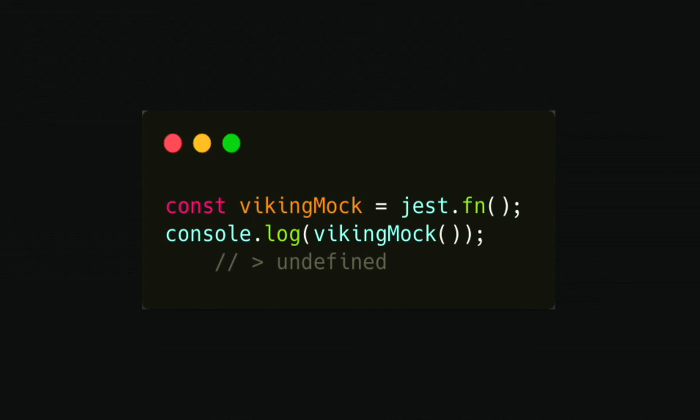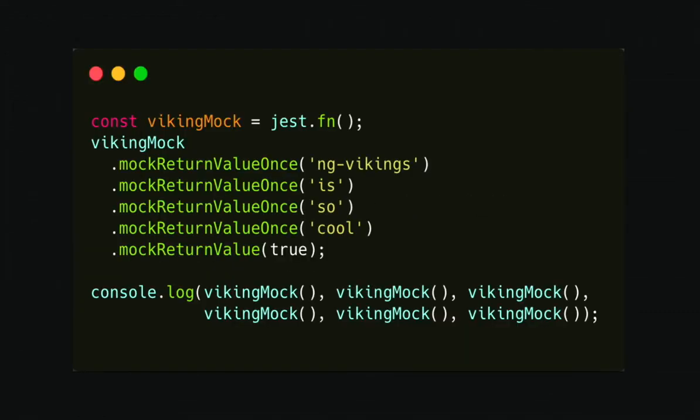And we have something else that we can perform with our mock. Here, I just created a viking mock. It doesn't do anything, because if you print it out, it says undefined, which is quite logic, because you didn't say anything. I can define what will be the first return value, the second, the third, the fourth, the fifth. So, in this case, if I print it out, I just get ngviking as cool, true, true, true. So, that means the first five iterations that this mock has been executed, it will return my value that I returned, and then, at the end, it will always return true, in this case.